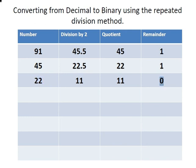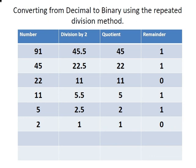Moving on: we bring 11 down. Dividing by 2 gives 5.5 — quotient 5, remainder 1. Bring 5 down: dividing by 2 gives 2.5 — quotient 2, remainder 1. Bring down the 2: dividing by 2 gives 1 — quotient 1, remainder 0. And lastly we bring down the 1: dividing by 2 gives 0.5 — quotient 0, remainder 1.